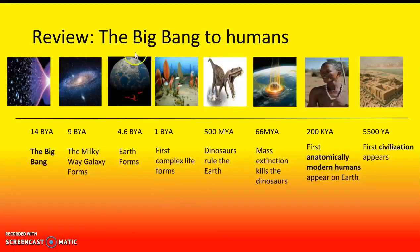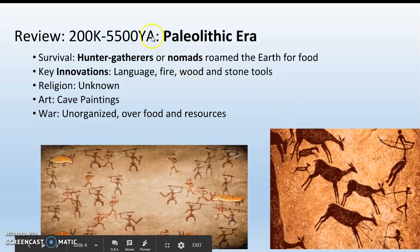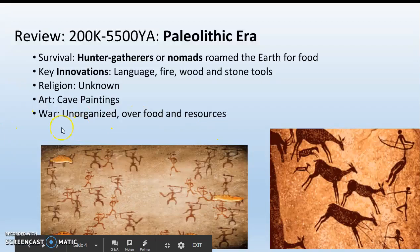We've talked about the Big Bang and the timeline of how the universe and then eventually Earth was formed, and then eventually humans started walking the Earth and created the first civilizations 5,500 years ago. We talked about the Paleolithic era and how people were hunter-gatherers. Key innovations were language, firewood, and stone tools, and then they mostly fought over food and other resources.